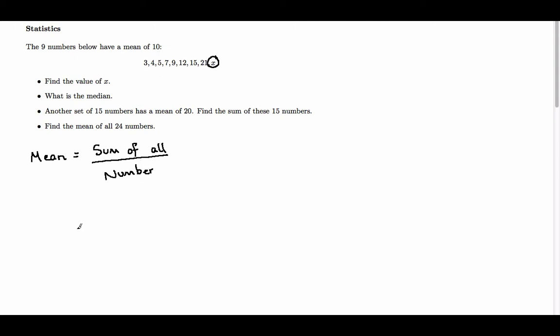So for this example, we know that the mean is 10, and the sum of all the values is 3 plus 4 plus 5 plus 7 plus 9 plus 12 plus 15 plus 21 plus our unknown value x. And the number of values that we've got there is 9.